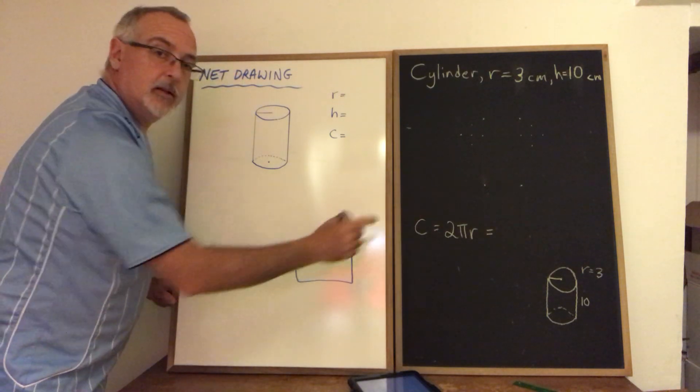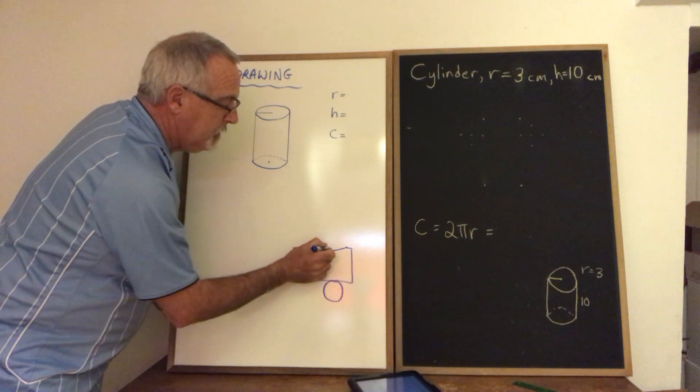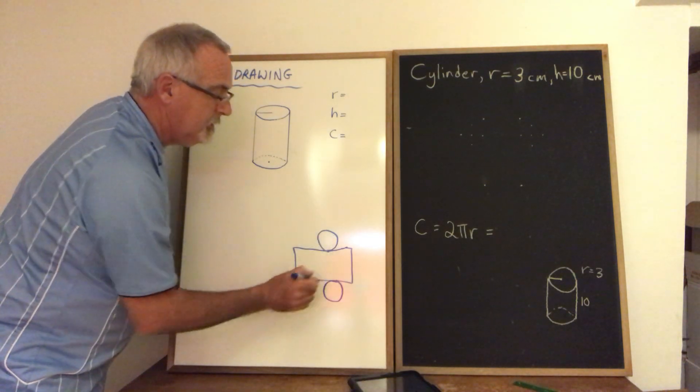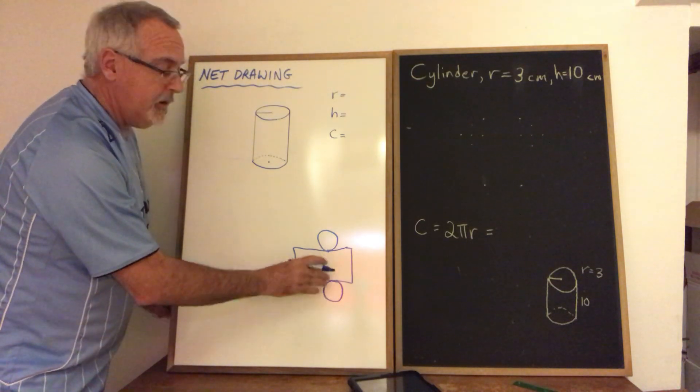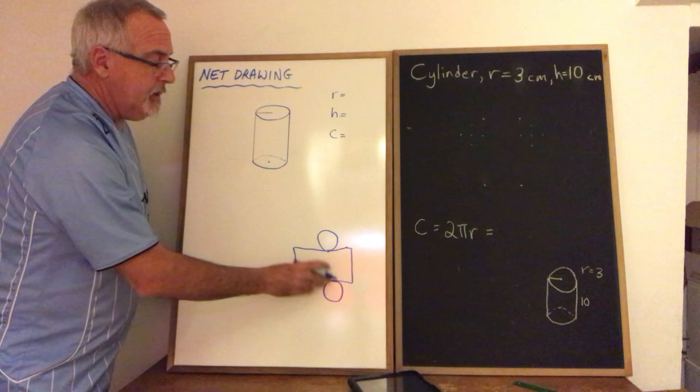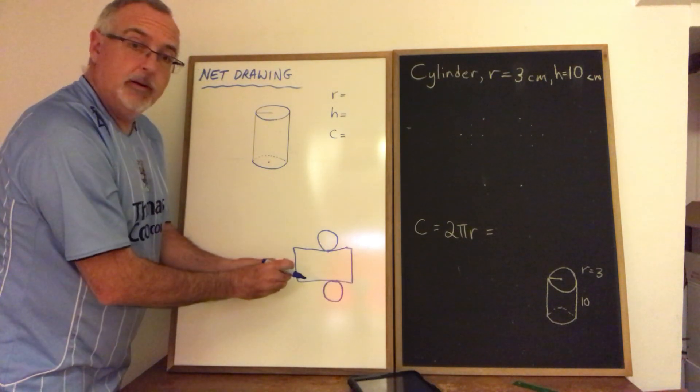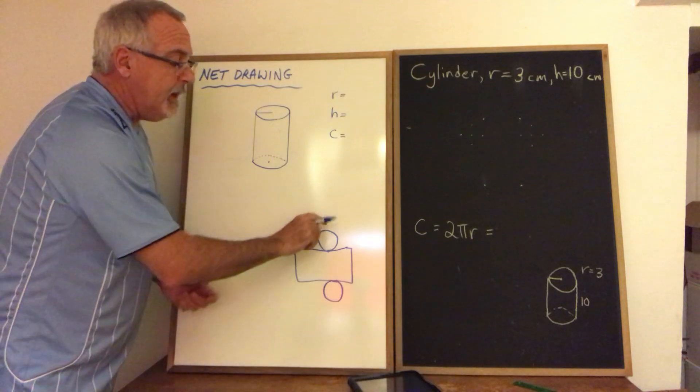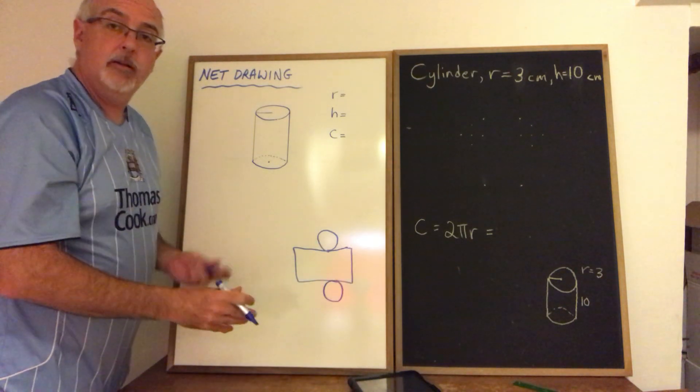And then the circles on the top and the bottom will be two circles the same size which are attached to that rectangle in such a way so that we can imagine rolling this rectangle back up and it forming the cylinder and then folding those two circles so that we have formed the entire cylinder.